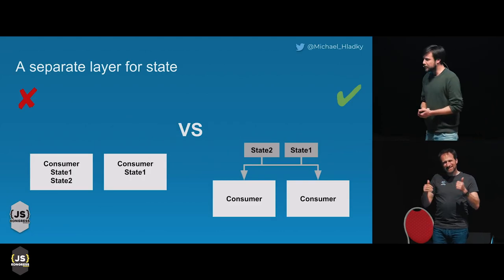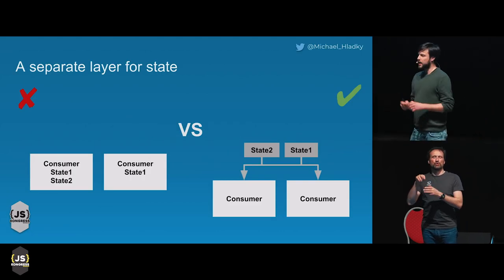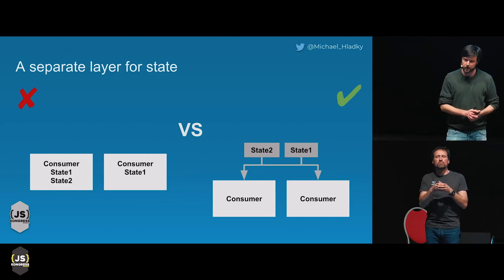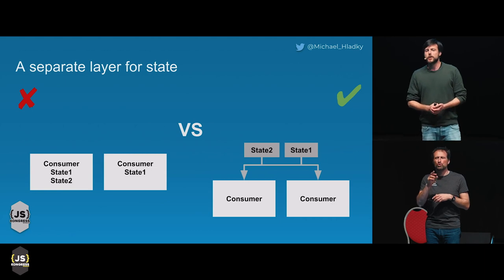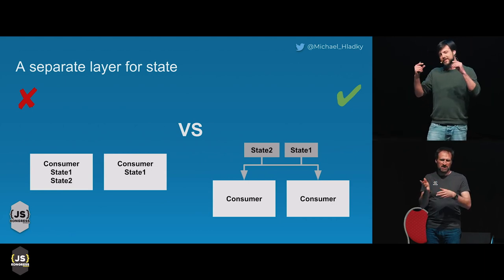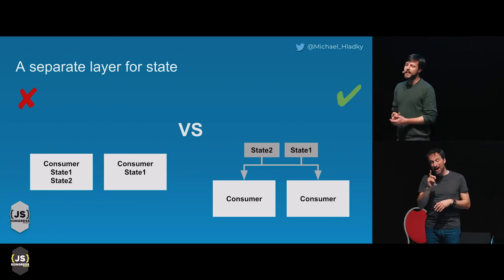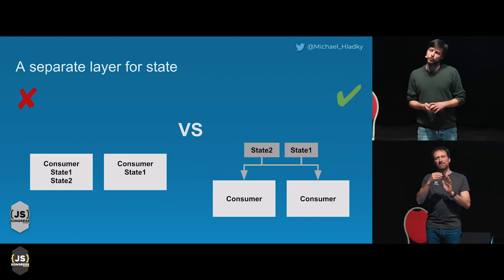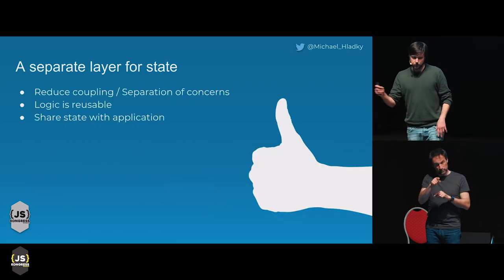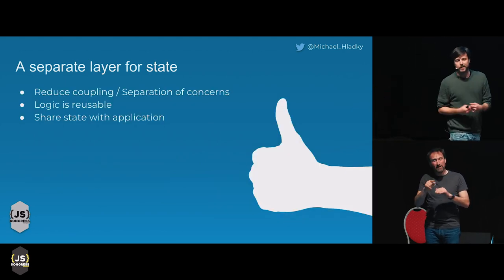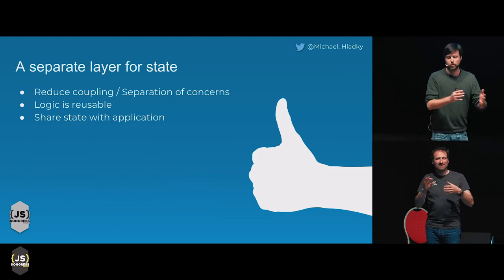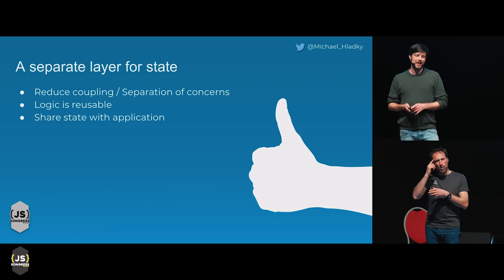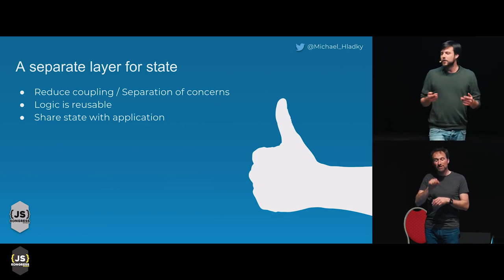If you start with a very tiny application, most of the time you hold your state in your components — this consumer block, the white block on the left. What I really suggest is to move this state into a separate layer. If you work on frameworks that provide you a service layer, this is the place where you should put it. This enables you to decouple and separate state management from your component logic. You can reuse it and, of course, you can share state in your application.